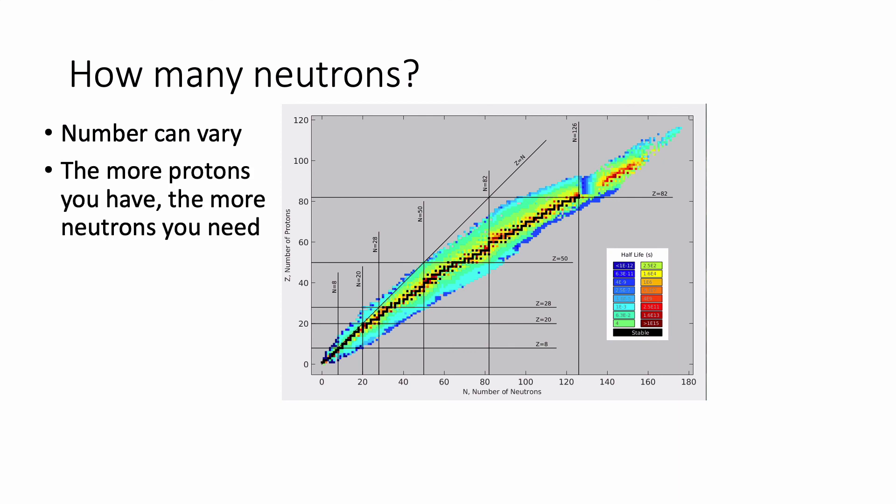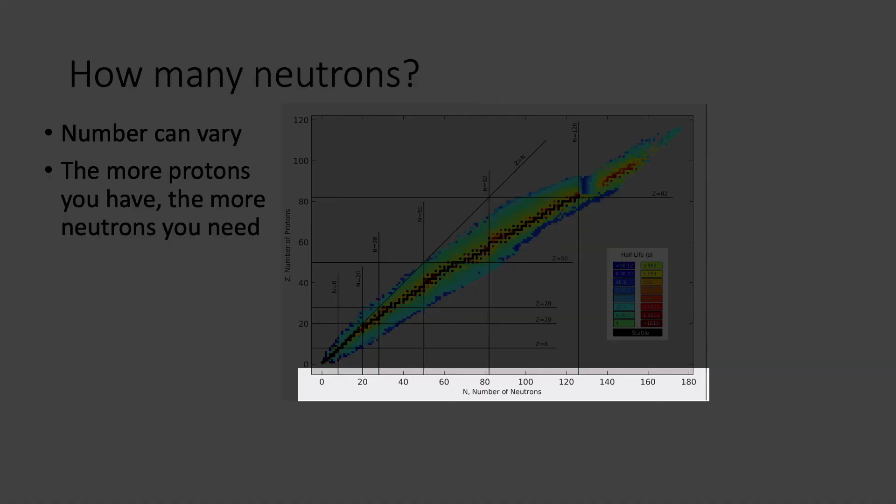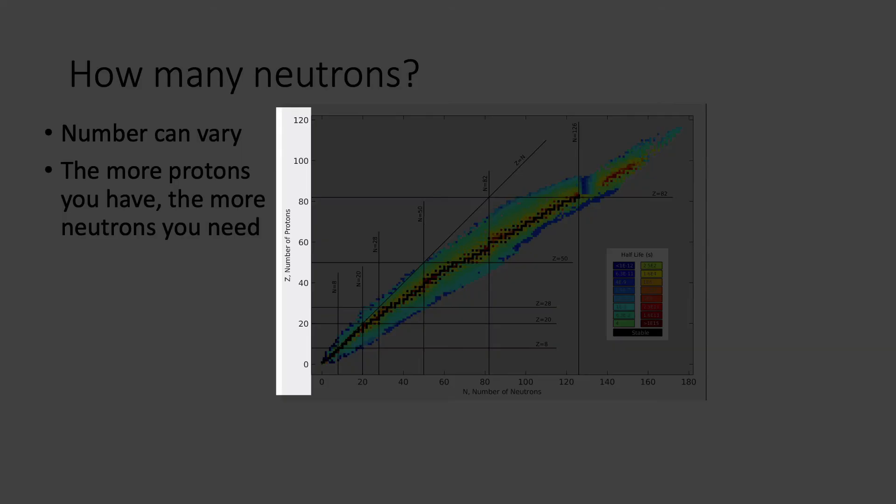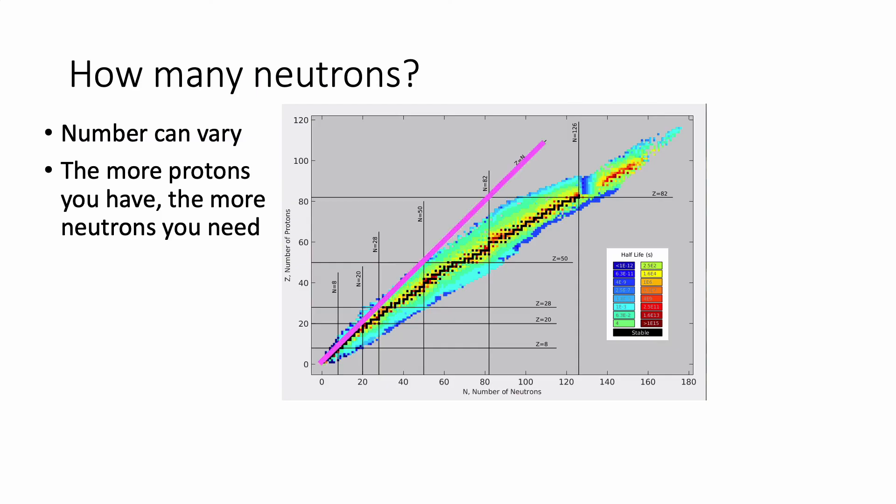So if you look at this graph, the x-axis is the number of neutrons. The y-axis is the number of protons. And there's this line right here where the number of protons equals the number of neutrons. And you can see that for lower numbers of protons, the number of neutrons you need is about the same as the number of protons. But then as you get up to higher and higher numbers of protons, you need more neutrons than protons.